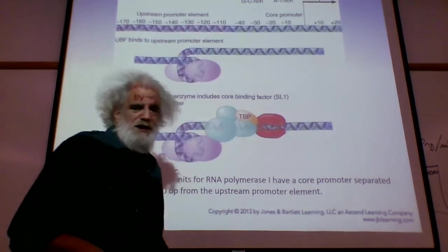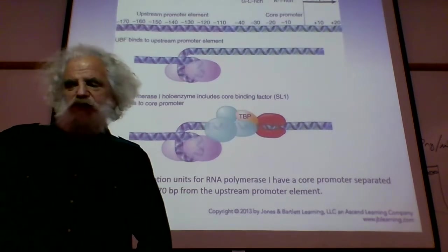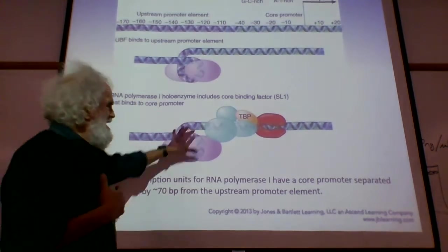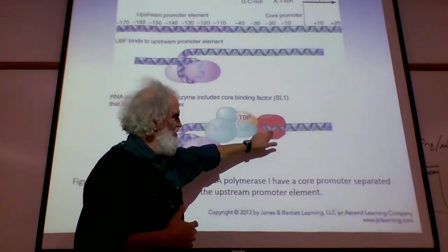Just take a little note—this is something called TATA binding protein. We're going to see that in Pol II, and it's present as well. Again, we're establishing this nest that allows the RNA polymerase to bind.